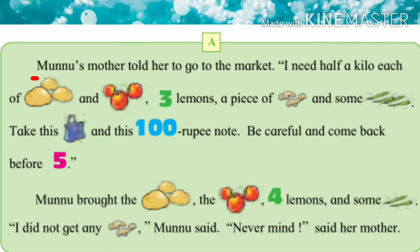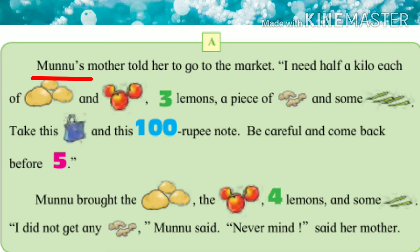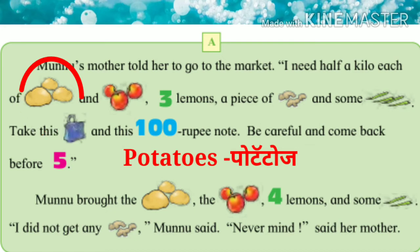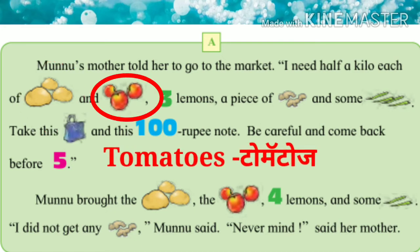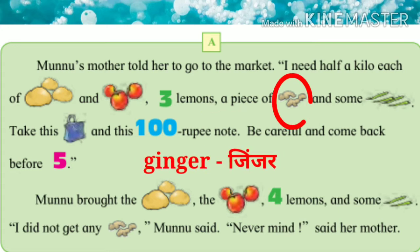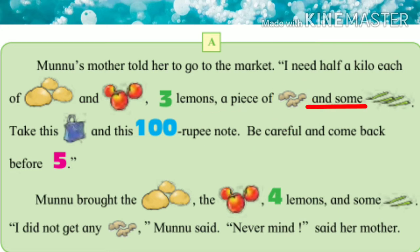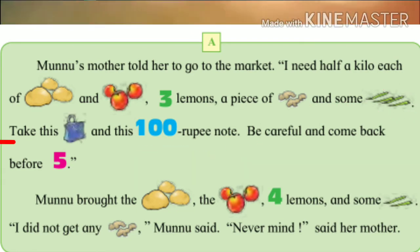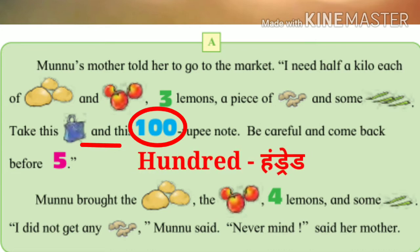Munnu's mother told her to go to the market. I need half a kilo each of potatoes and tomatoes, three lemons, a piece of ginger and some chillies. Take the bag and here's a hundred rupees more.